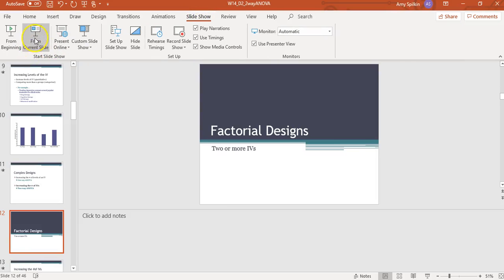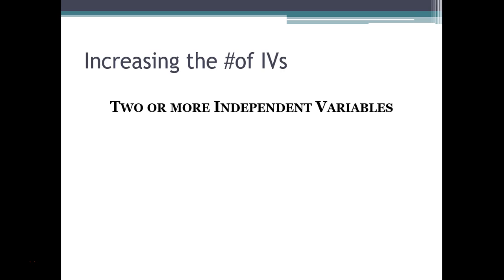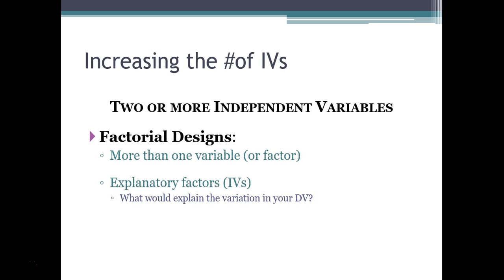Hello everybody. Today we're going to talk about factorial designs, which is when you have two or more independent variables. When you increase the number of independent variables, we call that a factorial design. Each independent variable becomes a factor, and therefore we have a factorial design. We talk about factors as explanatory factors — your independent variables that explain the variability in your dependent variable.